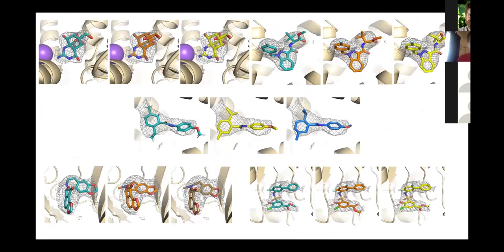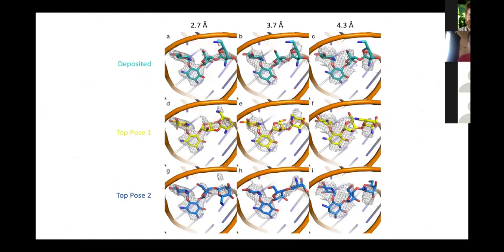We've used GEMspot on a wide variety of systems to benchmark it at various resolutions. The teal structures are deposited in the PDB, and we're matching very well in most cases — all poses are both chemically reasonable and fit the density well. As an additional test, we took the Leishmania ribosome at 2.7 angstroms and used smaller and smaller particle sets to produce lower resolution maps. Even at 4.3 angstroms with a very blobby map, we're still placing the two key rings of paromomycin in the correct position.